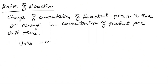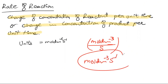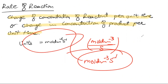The units of rate of reaction are mol dm⁻³ s⁻¹. Why are these the units? Because you have the change in concentration of reactant per unit time, or change in concentration of product per unit time. Change in concentration means mol dm⁻³, divided by seconds. So this gives mol dm⁻³ s⁻¹.